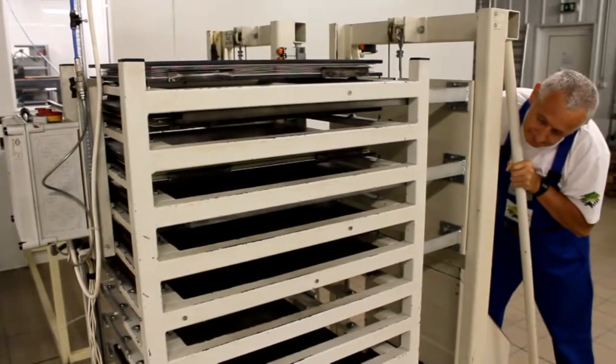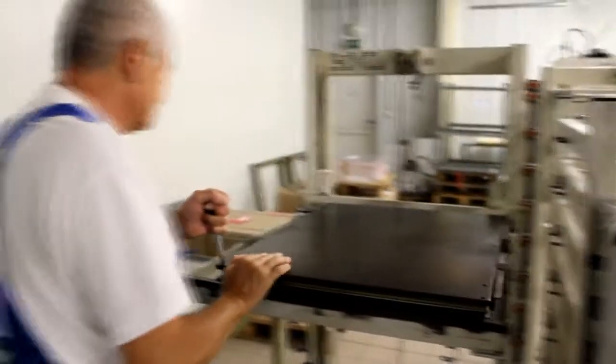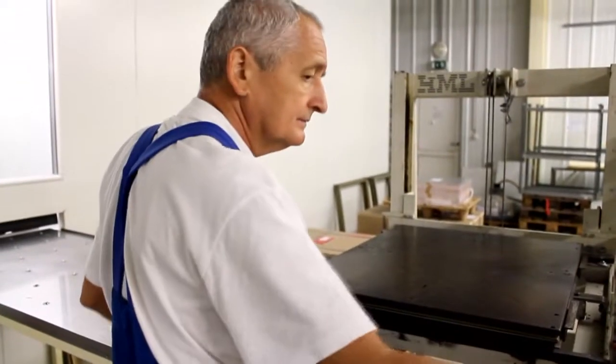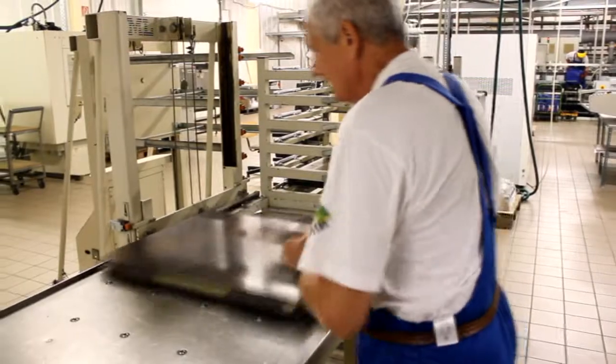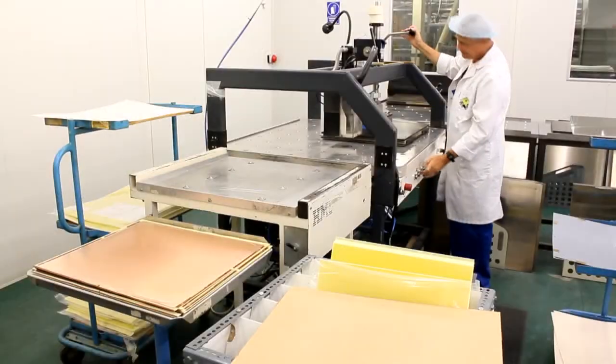Once the cycle is completed, the press operator unloads the press and carefully rolls the heavy stacks into the clean room. Here the layup operator deepens the stack and removes the top plate.